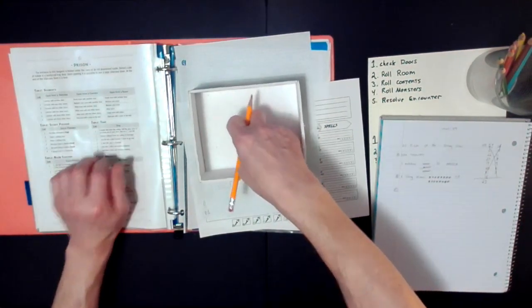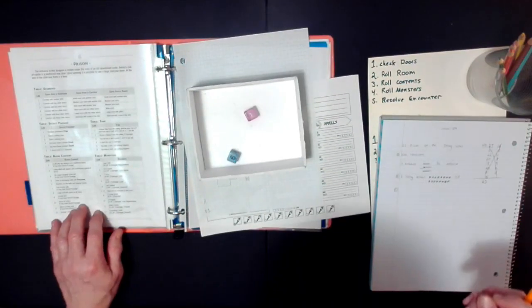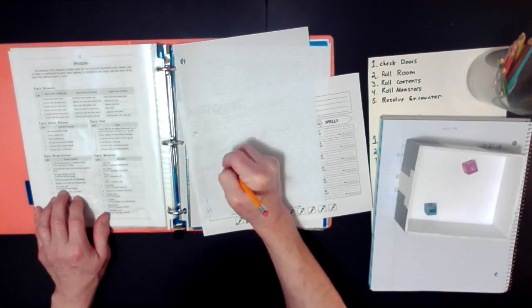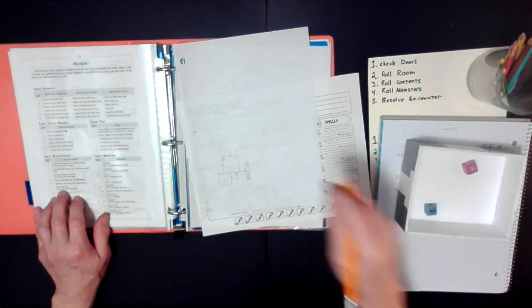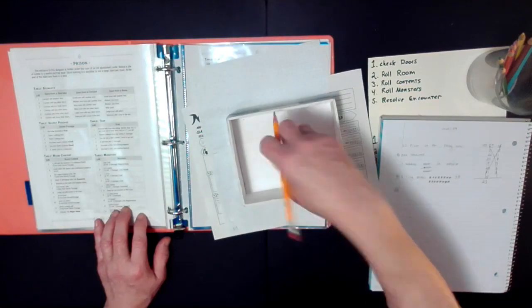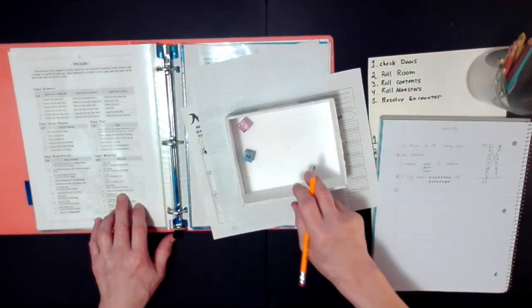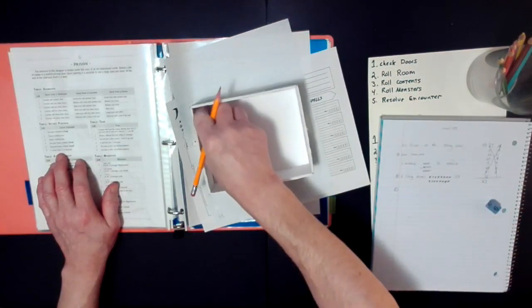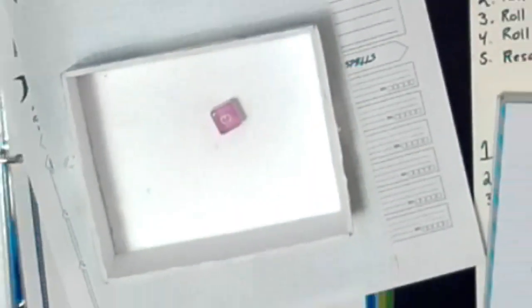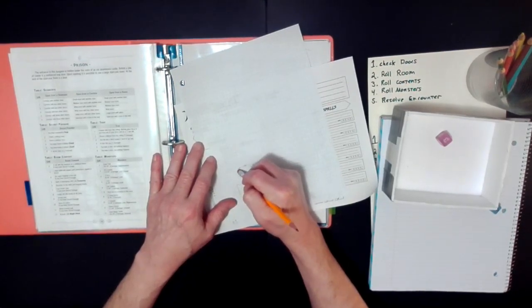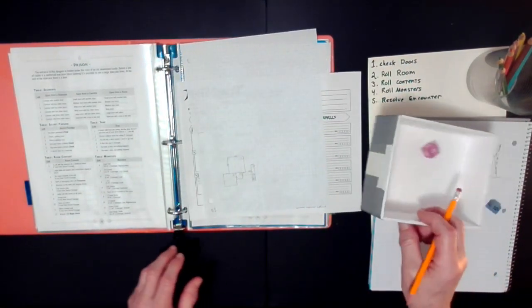Now, let us roll for contents. 7. 4 empty cells, but may have a secret passage. We're going to put an S with a circle, which means secret. Now we roll to see what monsters we have inside of here. If any, 7. Yeah, no monsters. So, we're going to search. Secret passage. We search this room, and we discover... Three. Nothing here. That was well-timed.